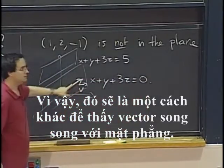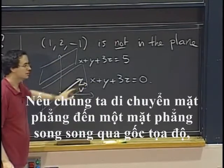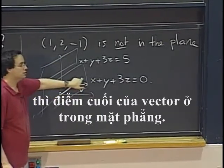So, that would be another way to see that the vector is parallel to the plane. If we move the plane to a parallel plane through the origin, then the endpoint of the vector is in the plane.